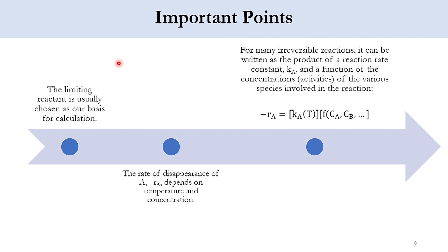The limiting reactant is usually chosen as the basis for calculation. The rate of disappearance of A, −R_A, depends on both temperature and concentration. Specifically, −R_A = K × C_A, where K is a function of temperature and C_A is concentration. So R_A is a function of the specific reaction rate constant K (temperature-dependent only) and concentrations of species involved.